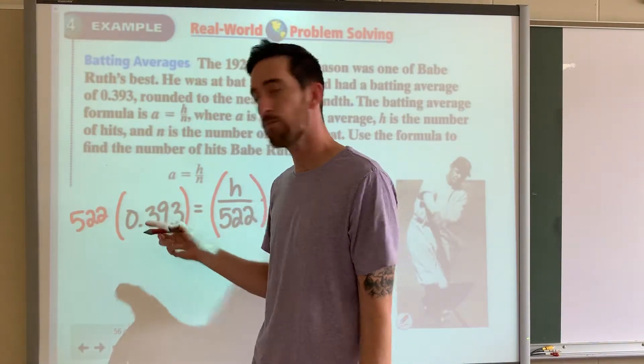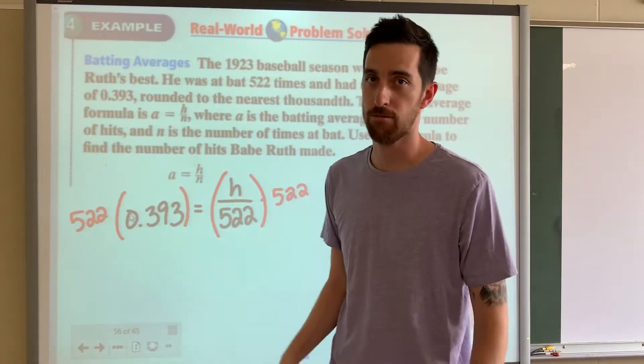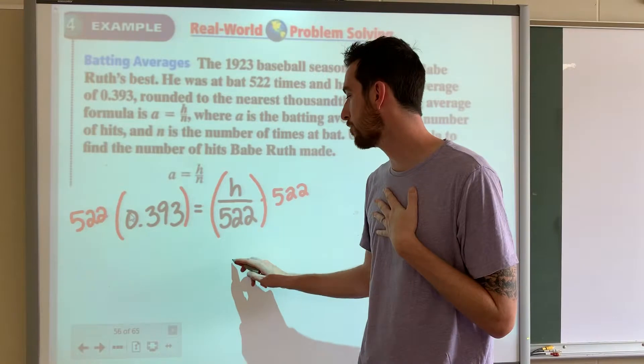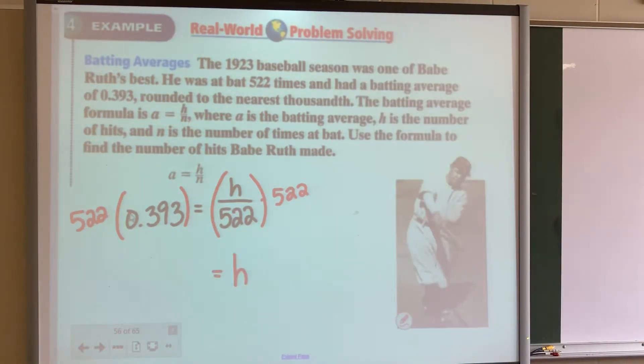Now you guys probably know your multiplication tables for 0.393. I don't, so let me check my calculator real quick. Let's see, let's crunch some numbers here. 205.146.